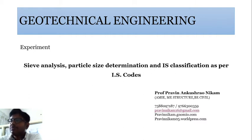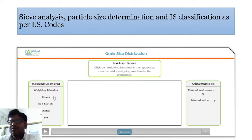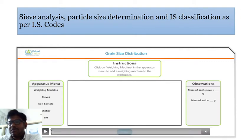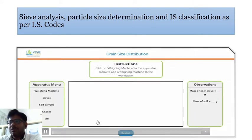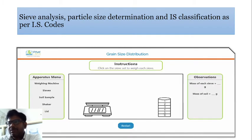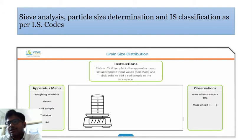In this experiment we require one weighing machine, sieve set, soil sample, and sieve shaker. With the help of weighing balance, we calculate the weight of each sieve by placing it on the weighing balance. Then we take some particular amount of soil sample.